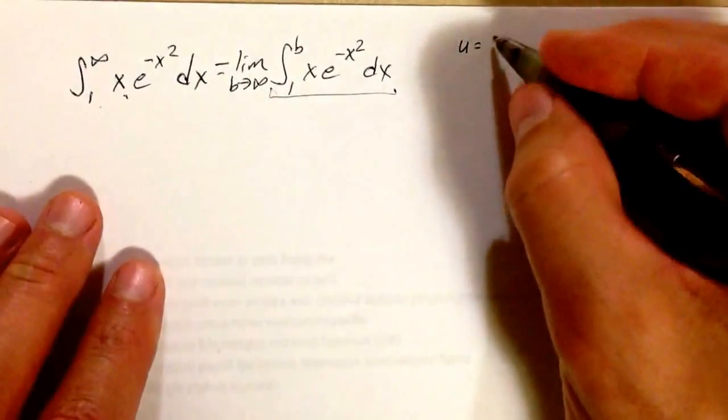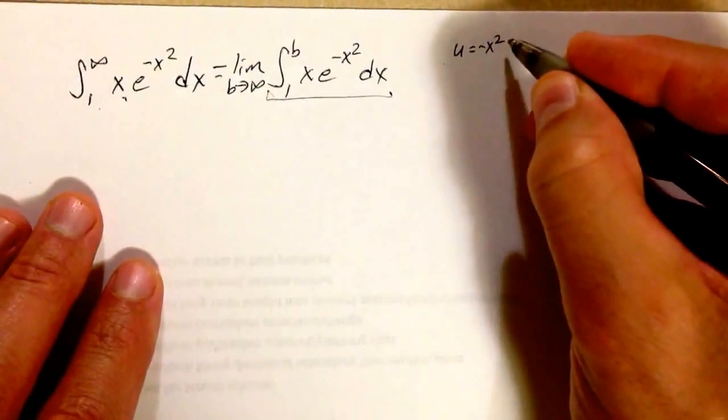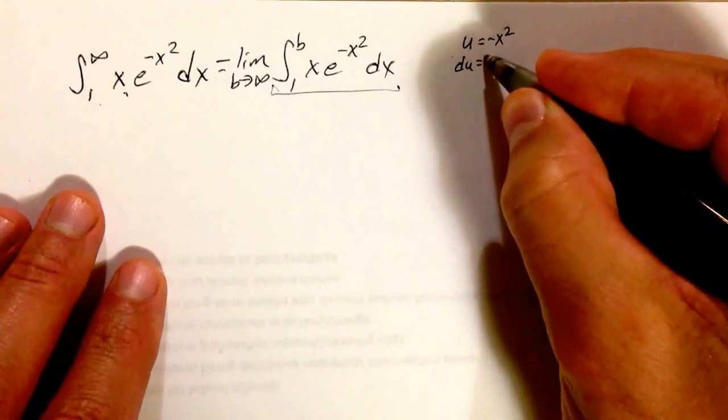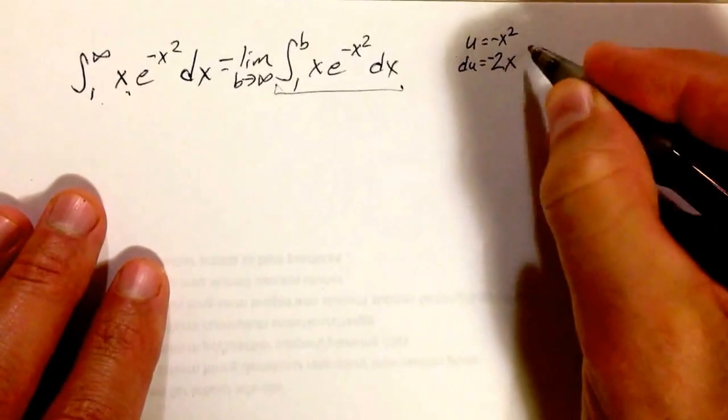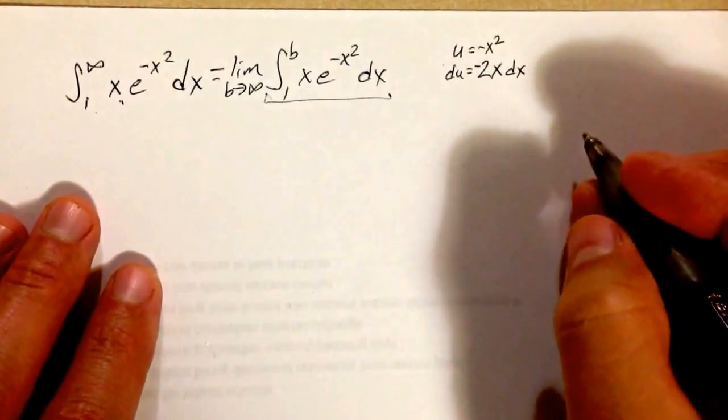u equals negative x squared, and that makes du equal negative 2x dx.